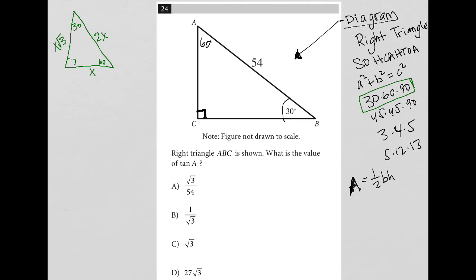So I can use that information to realize that if this is the hypotenuse, then this is like my 2x side. 54 is equal to 2x. Which means that the side opposite of 30 degrees has to be x, which must be 54 divided by 2, or 27.